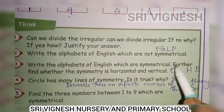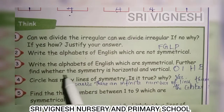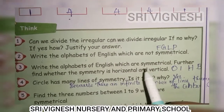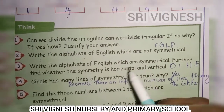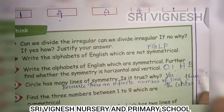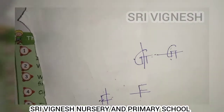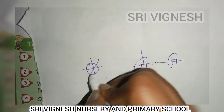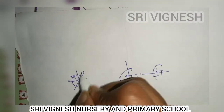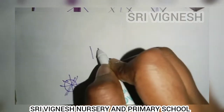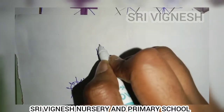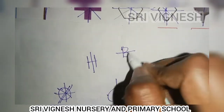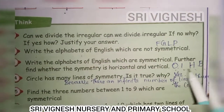Next, write the alphabets of English which are symmetrical, further find whether the symmetry is horizontal or vertical. What alphabets are symmetrical? We have O, I, H, B. O has an infinite number of lines of symmetry — if you divide it any way, the same line is true. If you call it B, it's symmetrical inside. So examples are O, I, H, B.